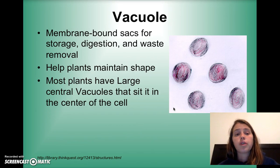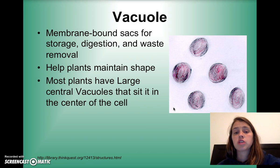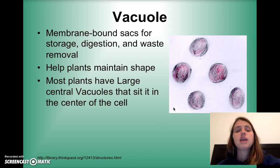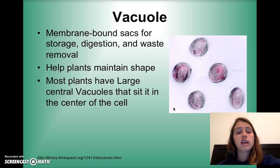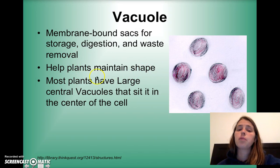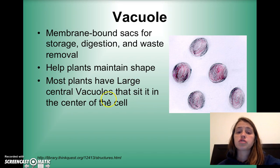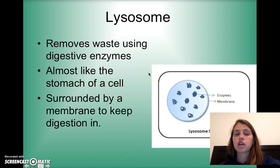The vacuole is a membrane-bound sack for storage, digestion, and waste removal — essentially where we store things. It's usually pretty big in plants and there are several small vacuoles in animal cells. In plants, the large central vacuole sits in the center of the cell and helps maintain its shape.